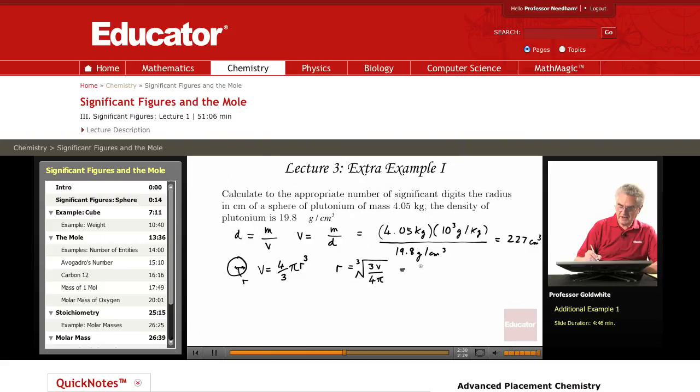And if we put the numbers we have into that equation, the radius of that sphere is the cube root of 3 times 227 centimeters cubed divided by 4 pi.